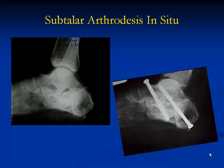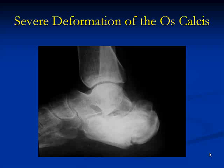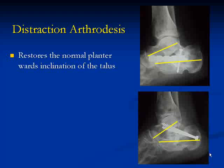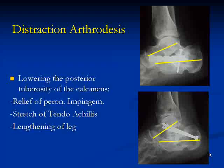An example of subtalar fusion in situ: where the calcaneus is not much deformed, a screw is placed from below upward and one from above downward. In cases with severe deformation of the os calcis — such as a patient previously treated by ORIF who now has arthritic pain — distraction arthrodesis is performed. This restores the angle between the talus and calcaneus, with a tricortical bone graft inserted. Distraction arthrodesis restores the normal plantar inclination of the talus, lowers the posterior tuberosity, relieves peroneal impingement, stretches the tendo Achilles, and lengthens the leg — however, the smashed heel fat pad pain remains.